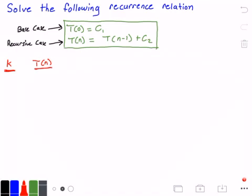In the first iteration, k equals 1. Our function t of n is going to be what we have up top there — we just rewrite the function. So we get t of n is equal to t of n minus 1 plus c subscript 2.